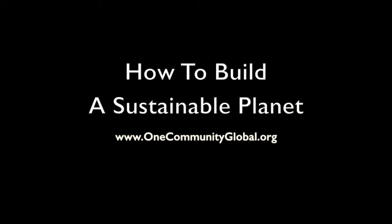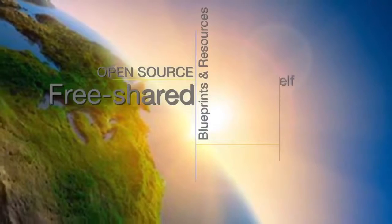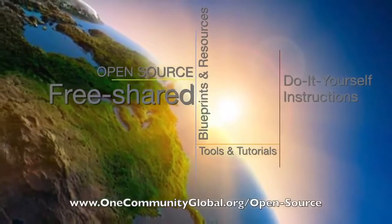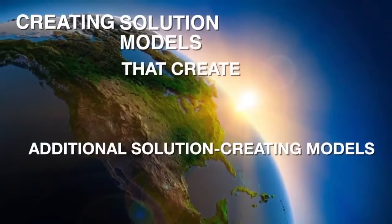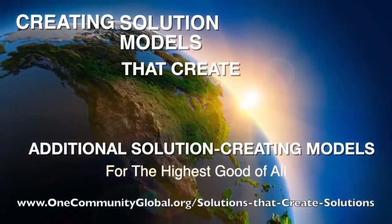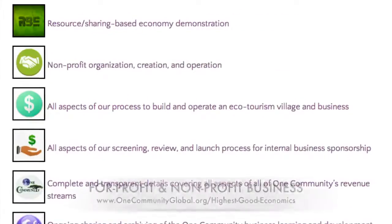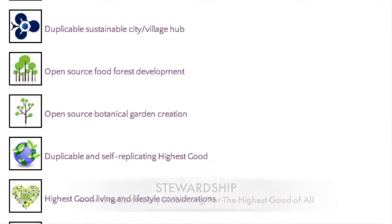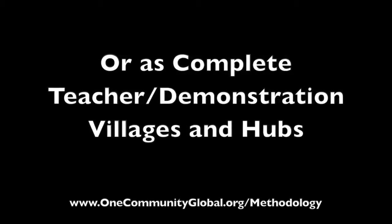One Community is a 501c3 non-profit organization creating open source and free shared blueprints, resources, tools, tutorials, and do-it-yourself instructions for highest good living — creating solution models that create additional solution-creating models in the service of all life on this planet. This includes highest good approaches to food, energy, housing, education, for-profit and non-profit business creation, society, and true earth stewardship, all implementable as individual components or as complete teacher demonstration villages and hubs.